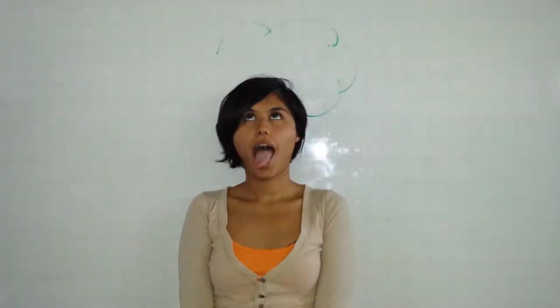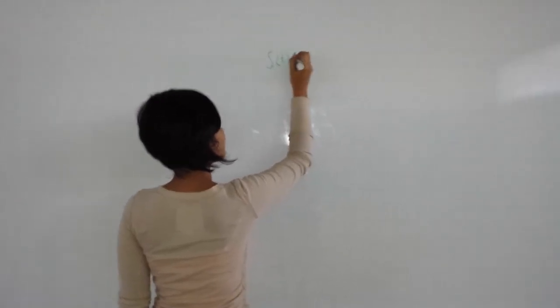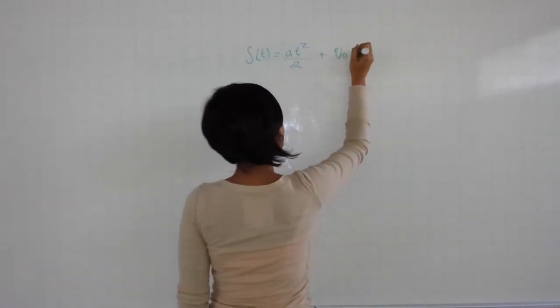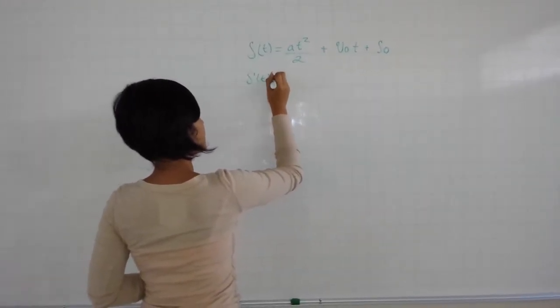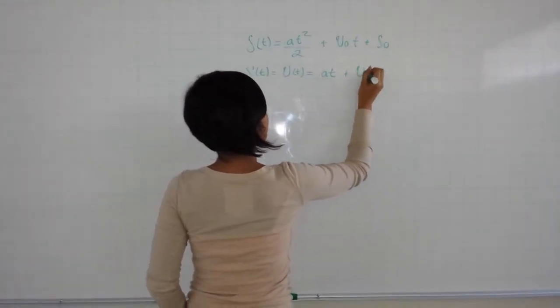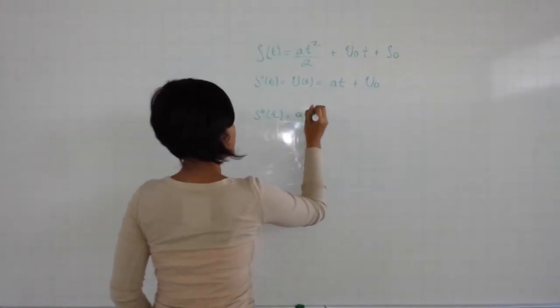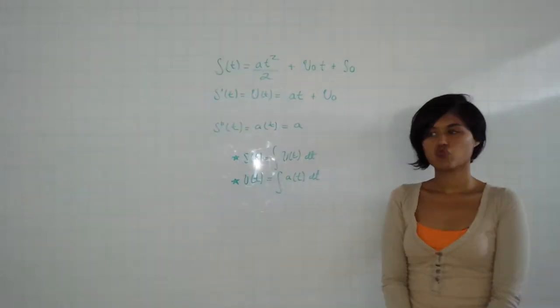Step 2. As we remember in physics from last semester, we need to use the position function and the respective derivatives. The first derivative gives us the velocity function and the second derivative gives us the acceleration function. This means that the integral of the velocity function equals the position function and the integral of the acceleration function equals the velocity function. Keep this in mind.